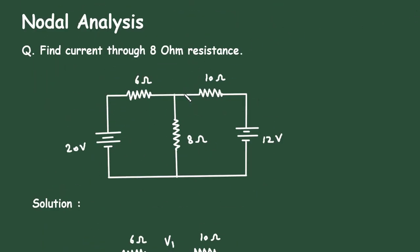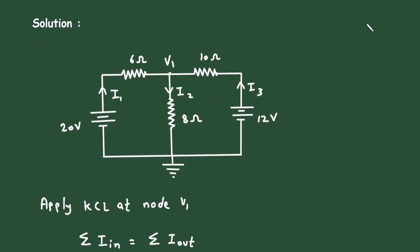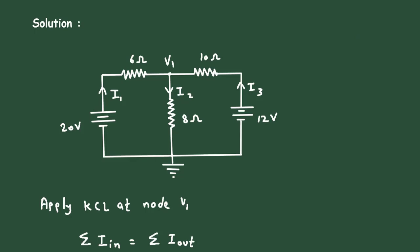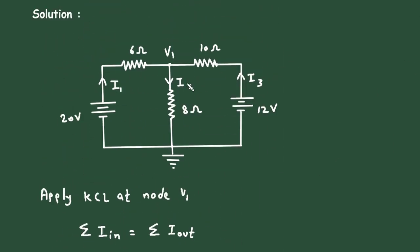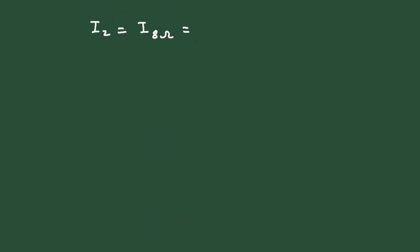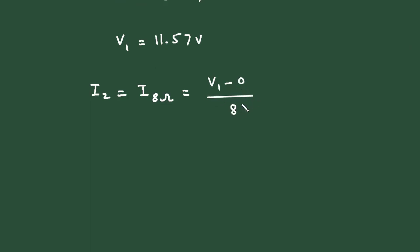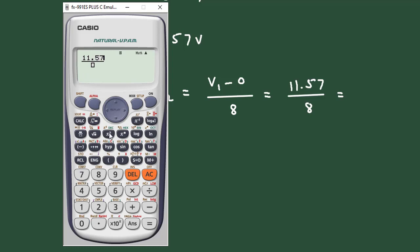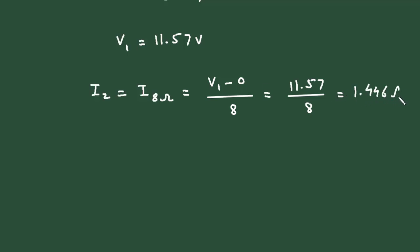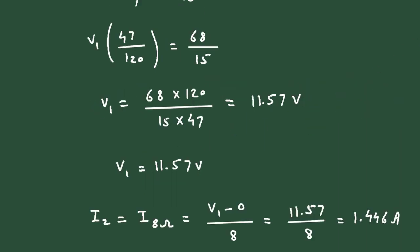Now we have to find the current through the 8 ohm resistance. The current through the 8 ohm resistor is I2, where I8ohm equals V1 minus 0 divided by 8, which is 11.57 divided by 8, giving 1.446 amperes. So this is how we can find the value of current by using nodal analysis.